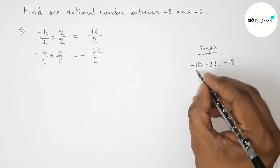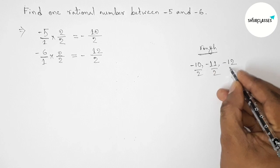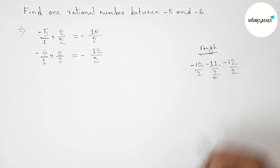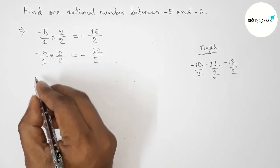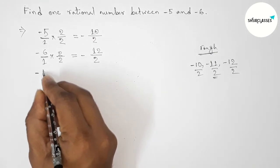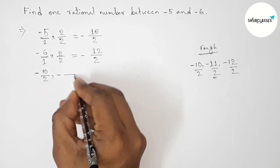So now, dividing all the numbers by 2, so this is minus 10 by 2. So this is the required rational number. Okay, so now again write down here all the rational numbers first.